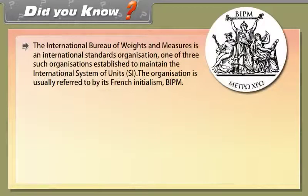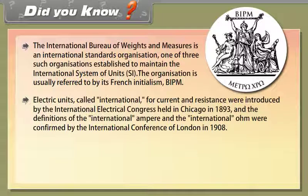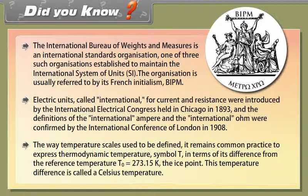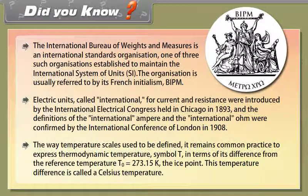Did You Know: The International Bureau of Weights and Measures is an international standards organization, one of three such organizations established to maintain the International System of Units SI. The organization is usually referred to by its French initialism BIPM. Electric units called international for current and resistance were introduced by the International Electrical Congress held in Chicago in 1893, and the definitions of the international ampere and international ohm were confirmed by the International Conference of London in 1908. The way temperature scales used to be defined: It remains common practice to express thermodynamic temperature, called T, in terms of its difference from the reference temperature T0 is equal to 273.15 Kelvin, the ice point. This temperature difference is called a Celsius temperature.